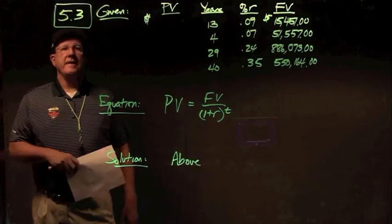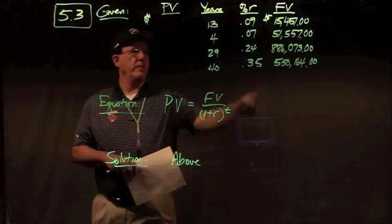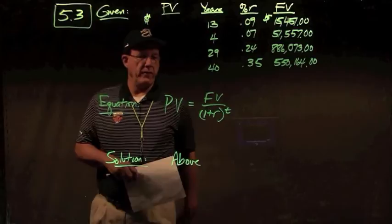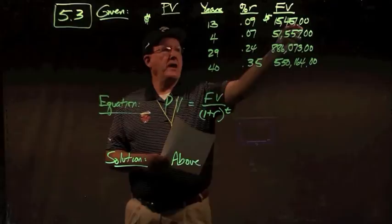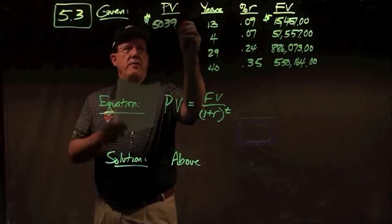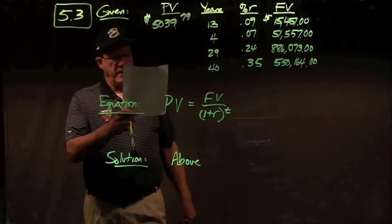In problem 5.3, we're solving for present values, given future value, number of years, and rate of return. The equation — rearranging the future value formula — is: Present Value equals Future Value divided by (1 plus r) to the t. Case A: $15,451 divided by 1.09 to the 13th power gives $5,039.79.